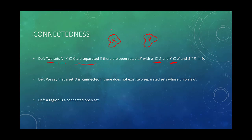Let me give a picture: here's X and here's Y — these sets are separated. The definition says two sets are separated if we can find open sets A and B that contain X and Y respectively, but A and B don't intersect. So given X and Y, if we can find such open disjoint sets A and B containing them respectively, then X and Y are called separated.